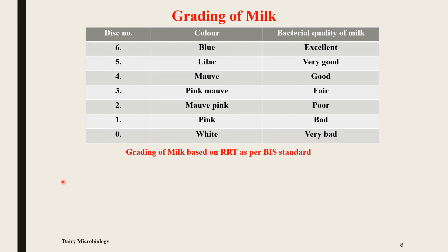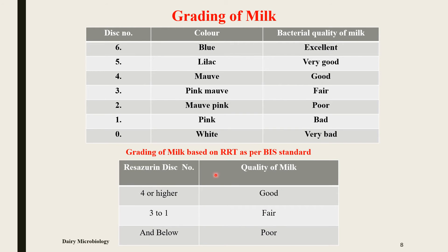Grading of milk based on RRT as per Bureau of Indian Standards: If the color of the tube after incubation matches disc number 4 or higher (4, 5, or 6), that milk is of good quality. If the color matches disc number 3 to 1, it is fair quality milk. And if the color matches below that, i.e., disc number 0, the milk is of poor quality. So, the RRT test is an example of a dye reduction test which can be used to judge the quality of milk.